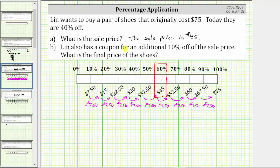Part B, Lynn also has a coupon for an additional 10% off of the sale price. What is the final price of the shoes? Answering this question with the tape diagram,